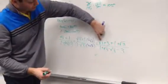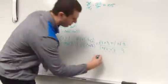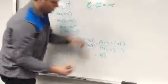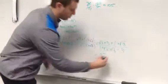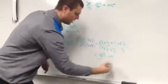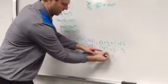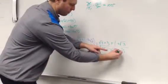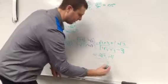On the top, I have two like terms. 1 root 3 plus 1 root 3 would make 2 root 3's. Positive 3 plus 1 would make positive 4. On the bottom, these two cancel out. So I have 1 minus 3, which would be negative 2.